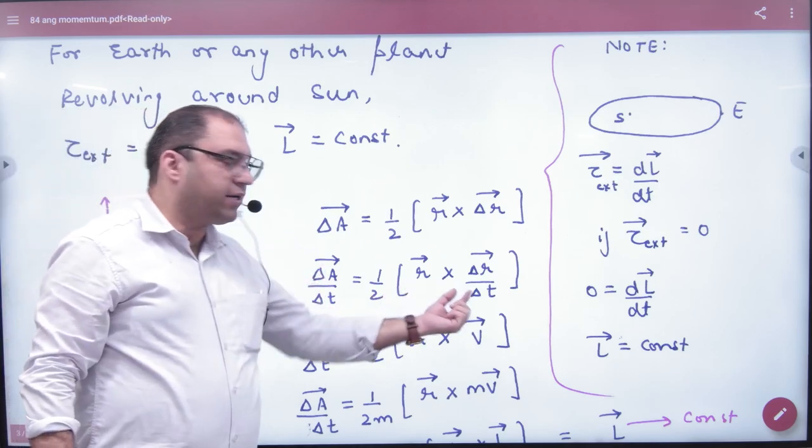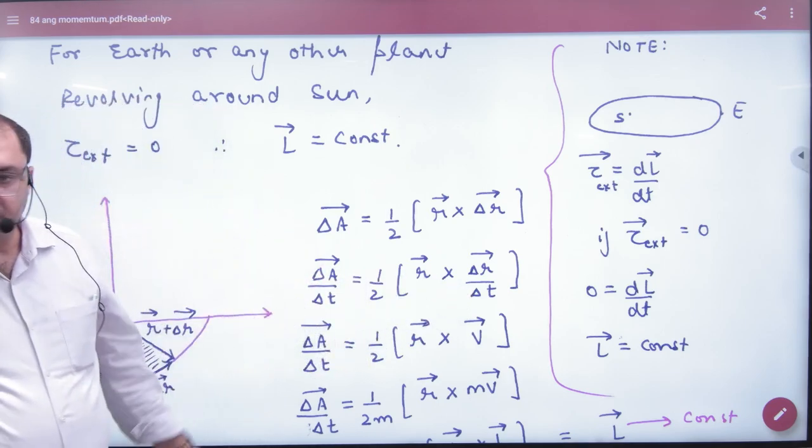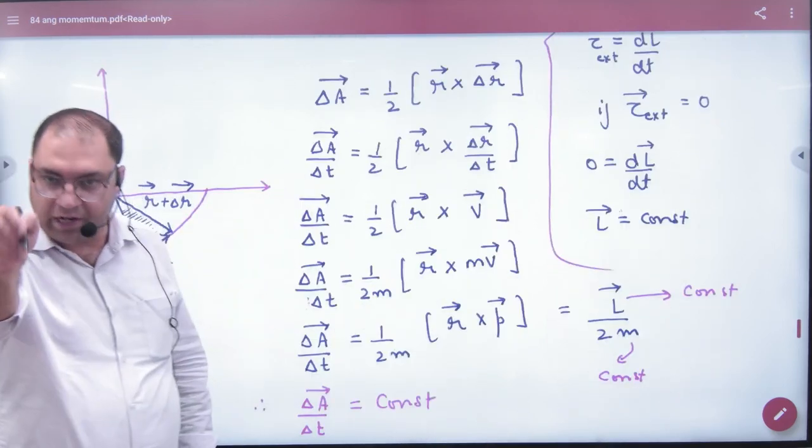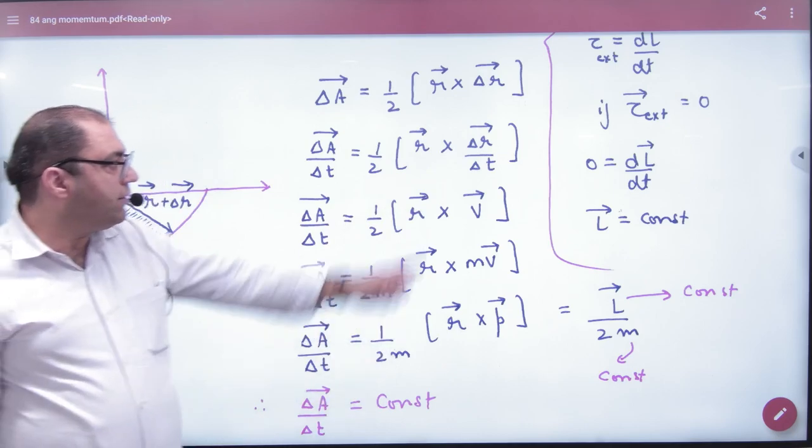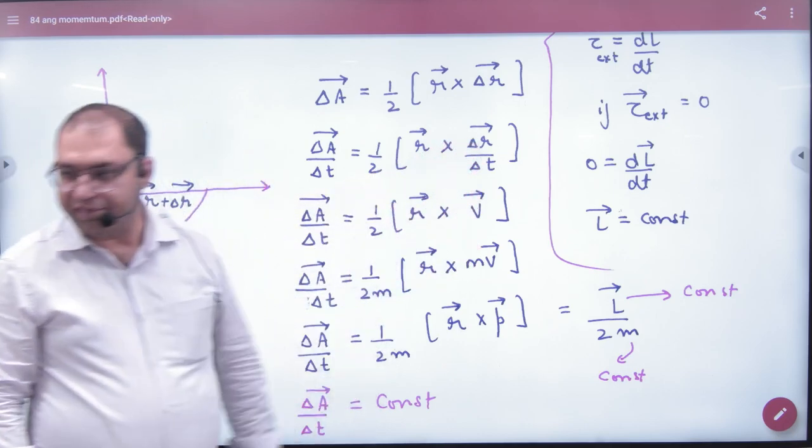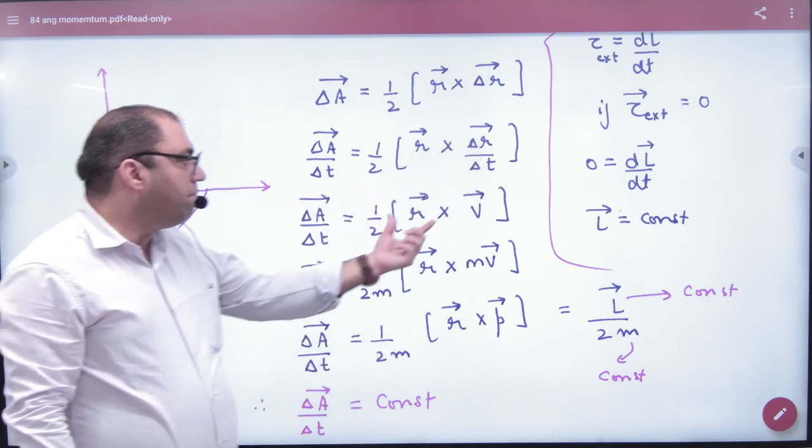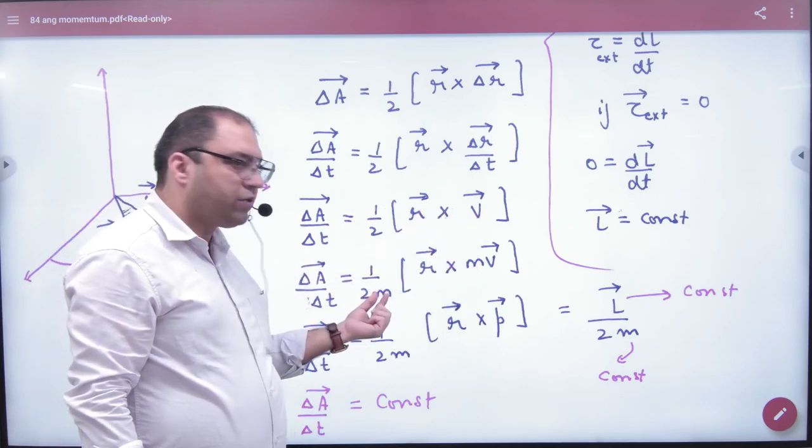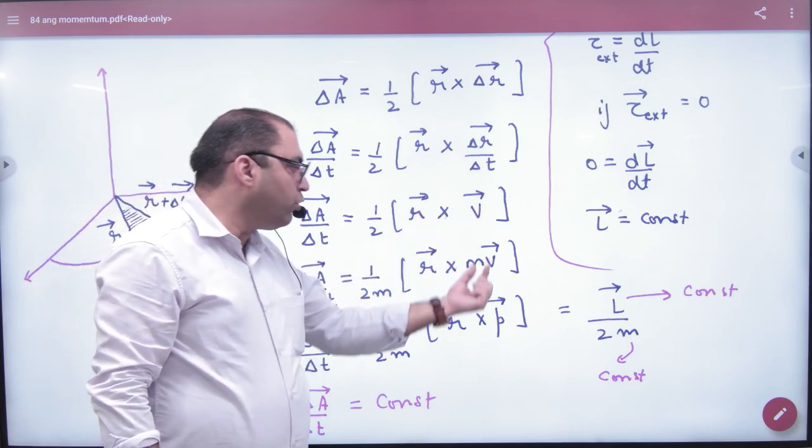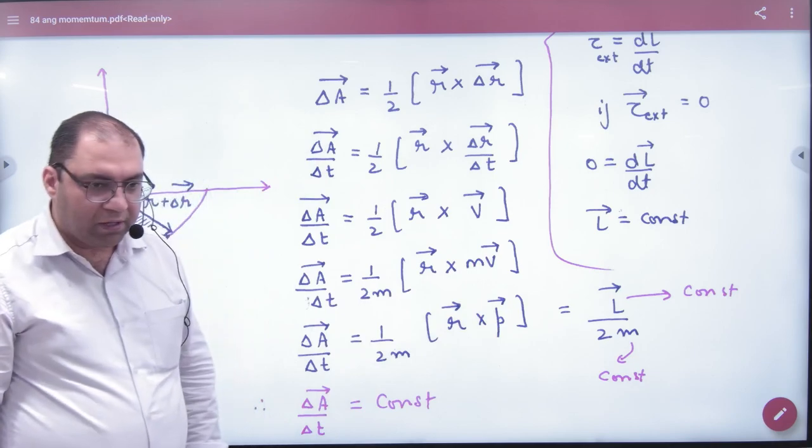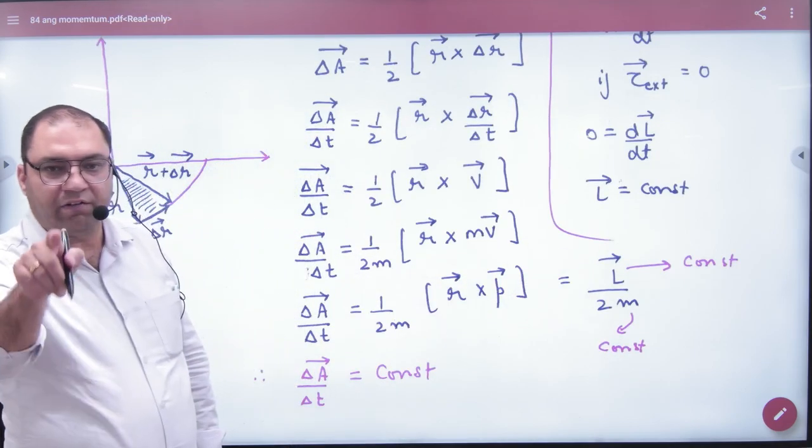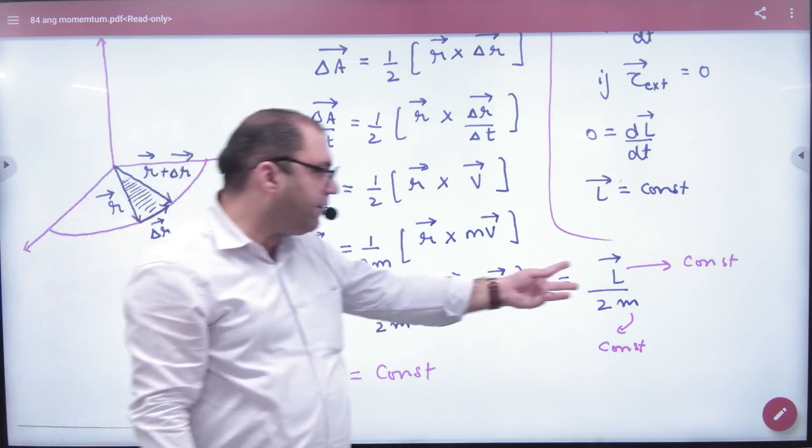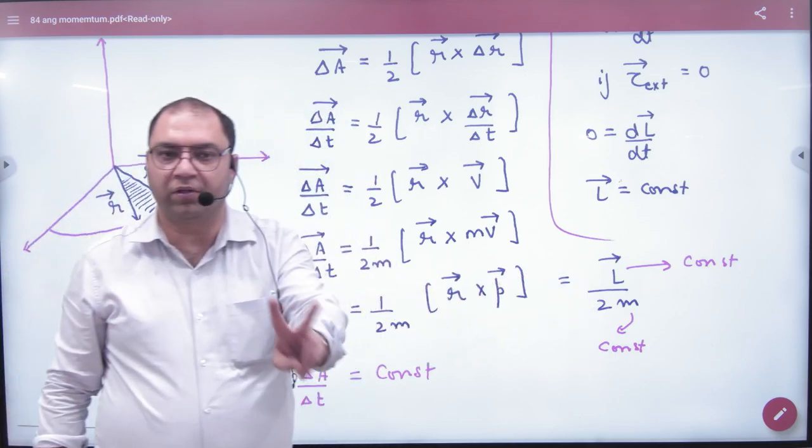I don't recall the area vector, I recall the areal velocity. So both sides divided by delta T. So what will be the left hand side? dA by delta T. Now what is delta R by delta T? V. Mass into V is P vector. R cross P is L vector. So your areal velocity is dA by delta T equals L upon 2M. This step is clear.